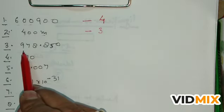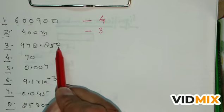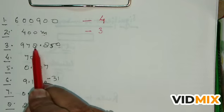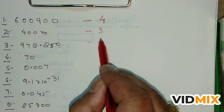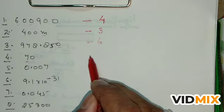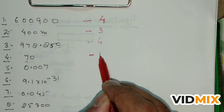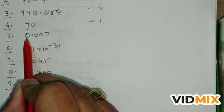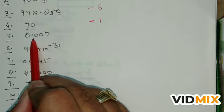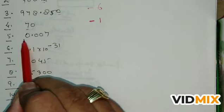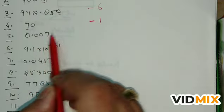Now 978.850 — this is a trailing zero but a decimal has come here, so we count it. Number of significant figures: 1, 2, 3, 4, 5, 6 — six significant figures. Now 0.007 — leading zeros are not significant, only the 7 counts. Number of significant figures = 1.